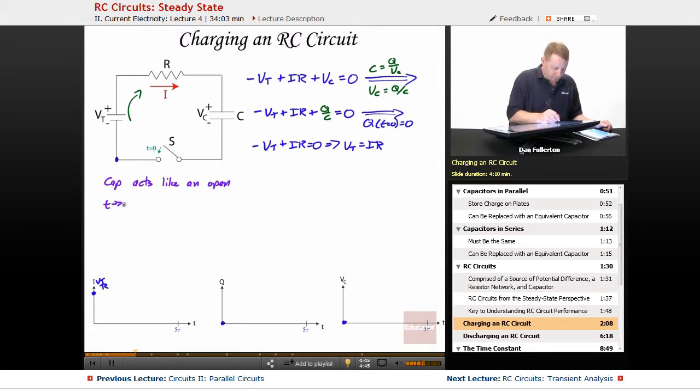So as T approaches infinity, as it gets very big, and we apply Kirchhoff's voltage law to the same loop, go around the same way, I have minus VT plus IR plus VC equals zero. But now since I equals zero, we find that VT equals VC. No current flowing, so we have the same voltage across the source of potential difference that we do across the capacitor.